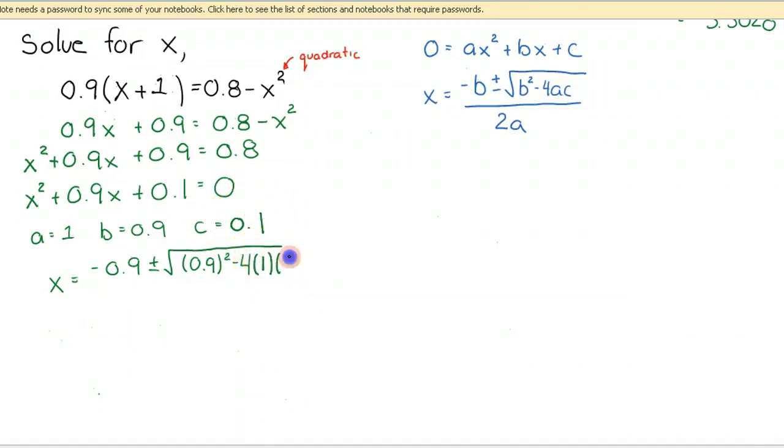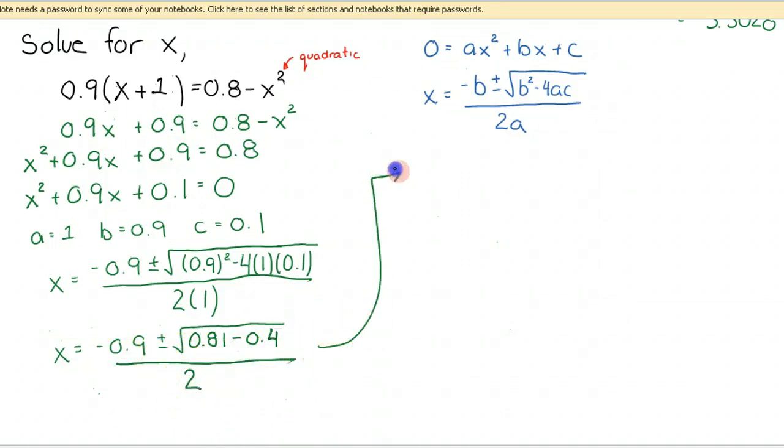4 times 1 times 0.1, and let's make sure we extend that to everything over 2 times a, which is 1. So therefore, x is equal to negative 0.9 plus or minus the square root of 0.81. Actually, let's take a second here. Let's write that as 0.81 minus 0.4 all over 2. So I get x is equal to negative 0.9 plus or minus the square root of 0.41 all over 2.